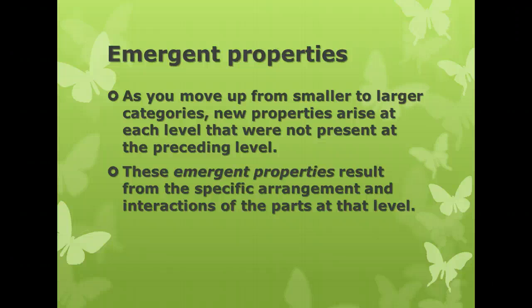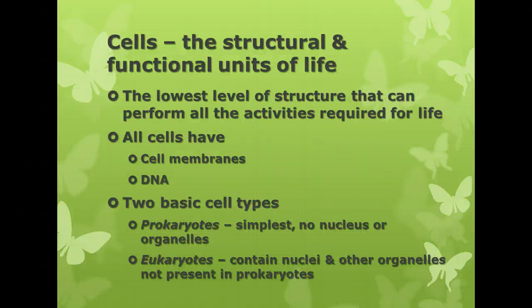Whether it's an ecosystem, a community, the biosphere, or a population, as you move into each level there are going to be new properties that emerge because of interactions within it. The basic structural and functional unit of living things is the cell. This is the smallest level of structure that can carry out all of the things required for life — all seven properties we talked about in the previous notes.